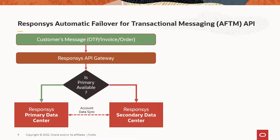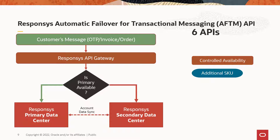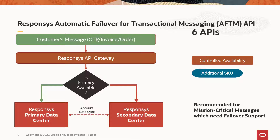Automatic Failover for Transactional Messaging (AFTM) provides high availability for API-triggered transactional email, push, and SMS messages during service disruptions. The customer's message is received by the Responses API Gateway, which sends to the Responses primary or secondary data center based on availability. They are recommended for mission-critical messages which need failover support.